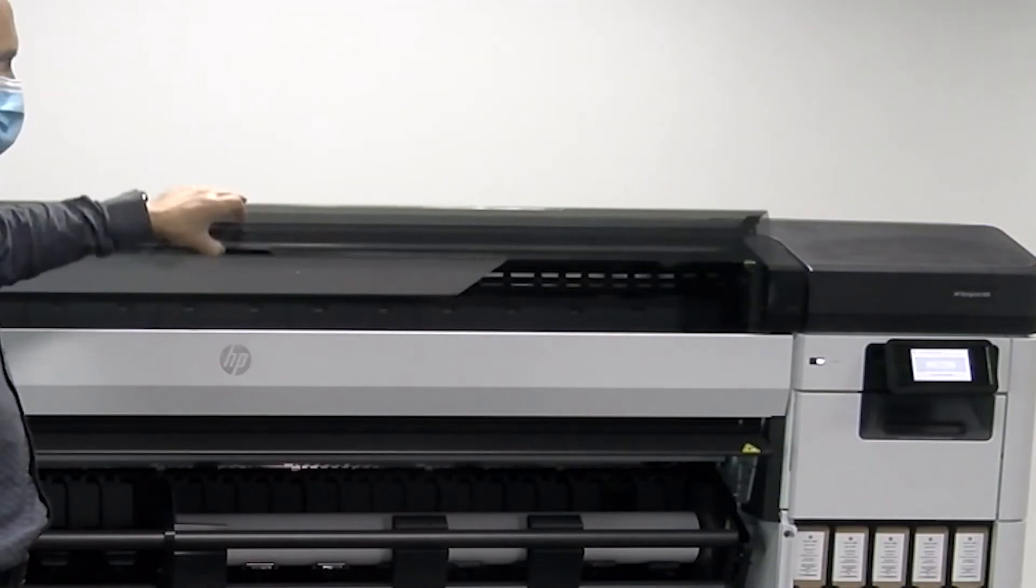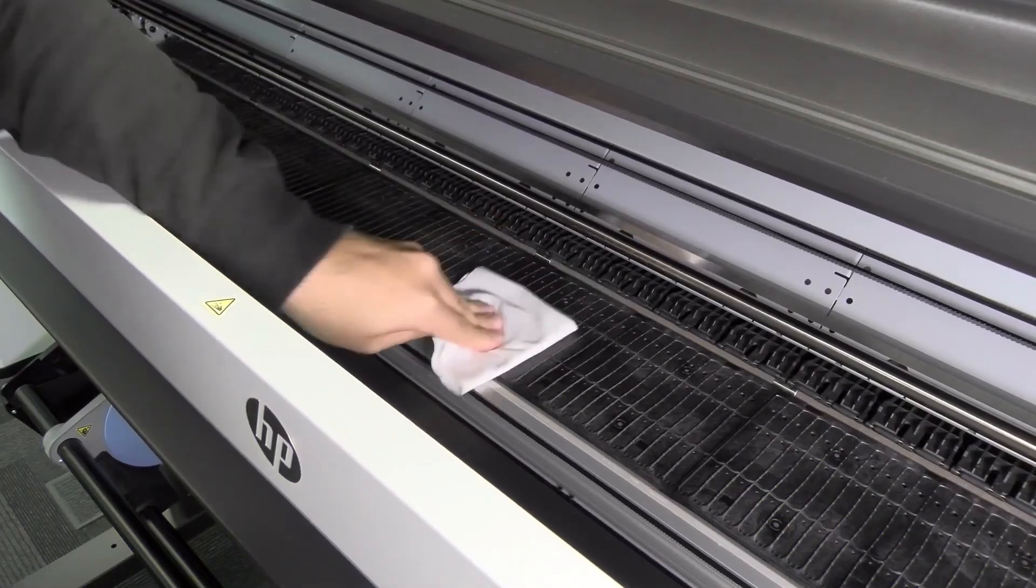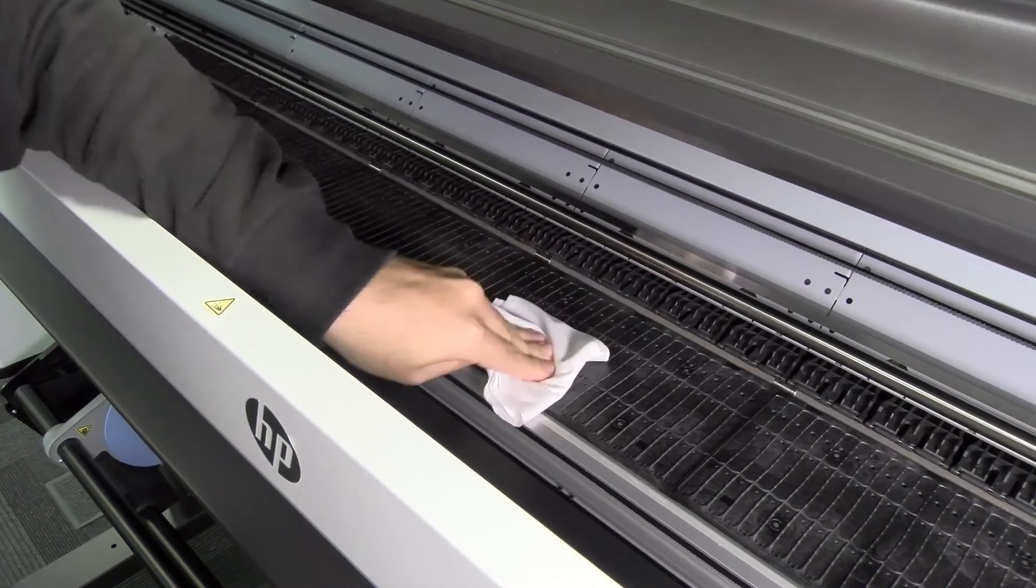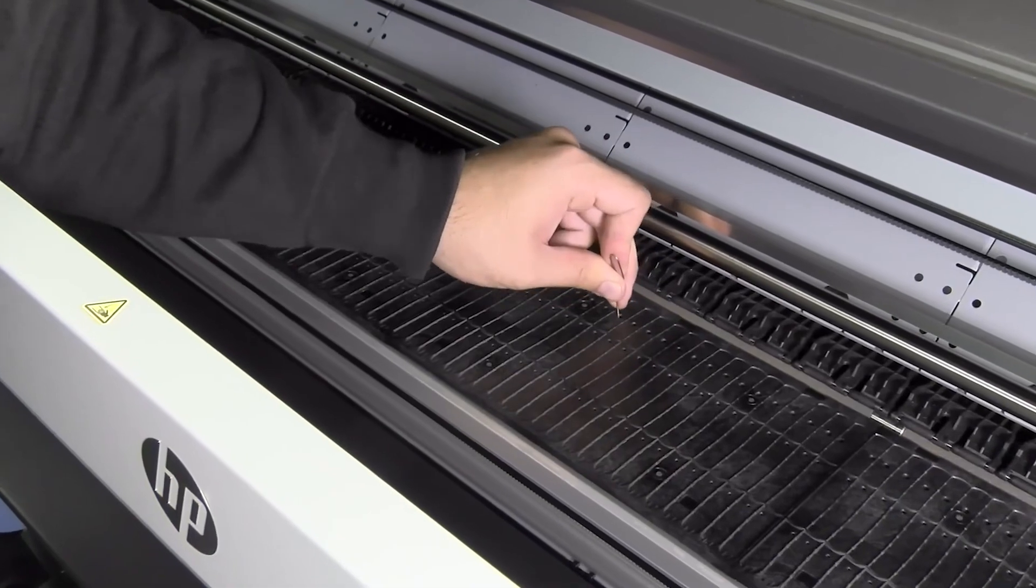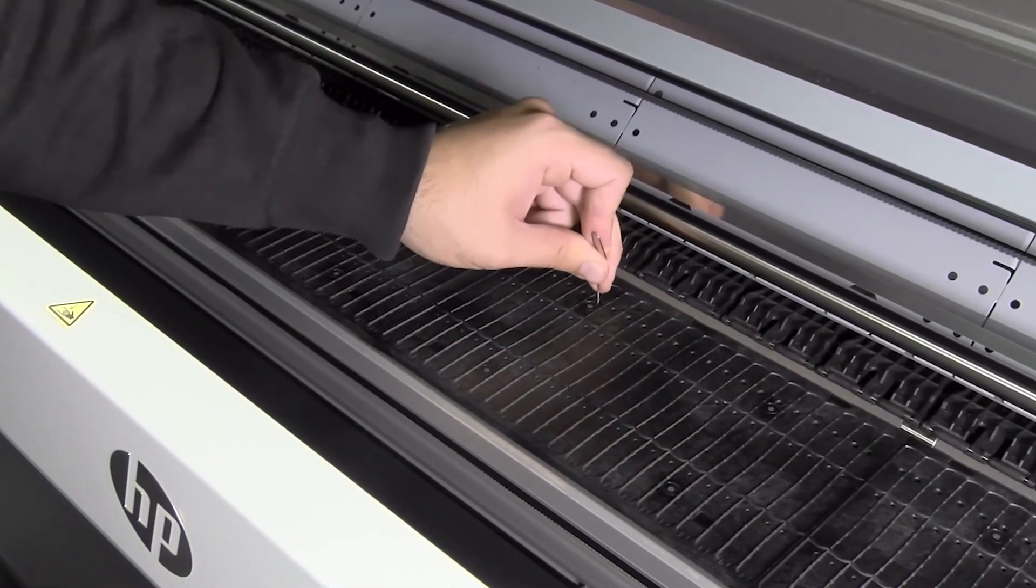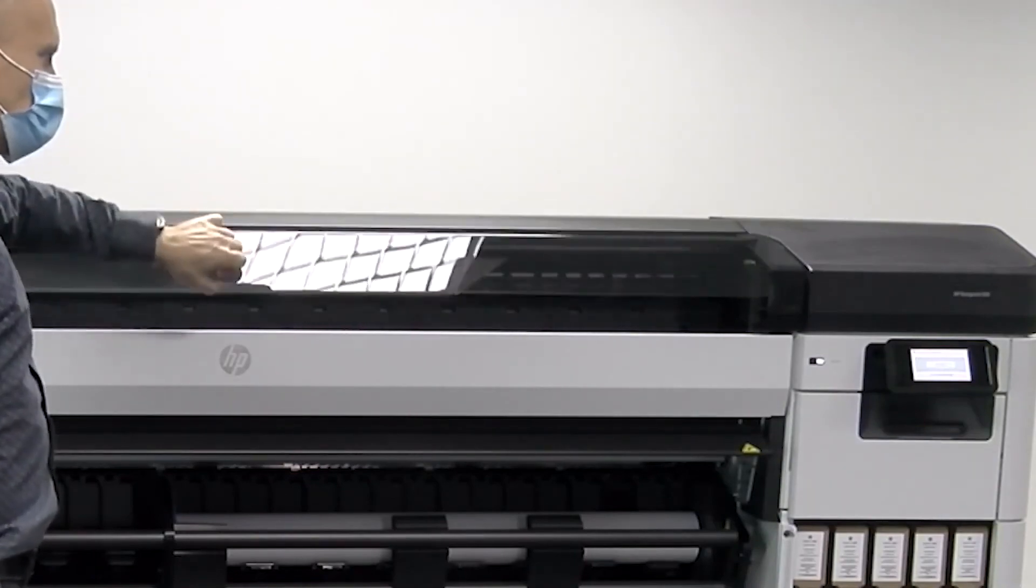Cleaning the platen: open the front cover. Clean the print platen with a cloth to remove ink and media dust. Use a one millimeter pin to unclog every hole in the print platen. Make sure you push the pin all the way through each hole. When you are finished, close the front cover.